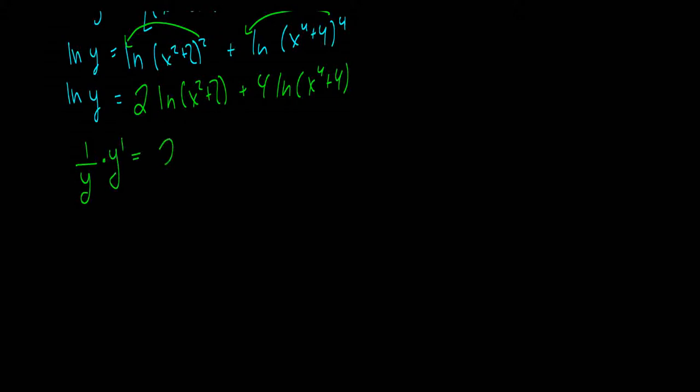The right side, we get 2 times 1 over x squared plus 2 multiplied by the inside, which is 2x, plus 4 times 1 over x to the 4 plus 4 multiplied by the derivative of x to the 4 plus 4, which is 4x cubed.